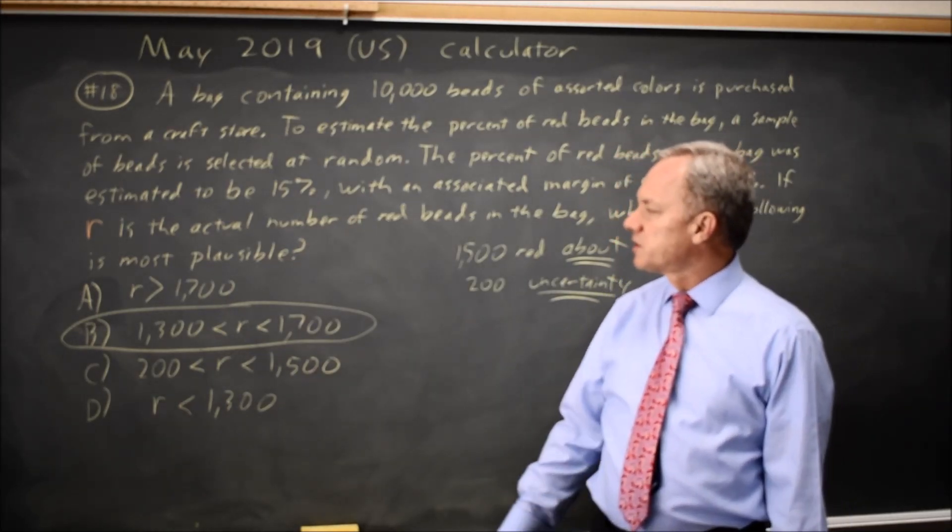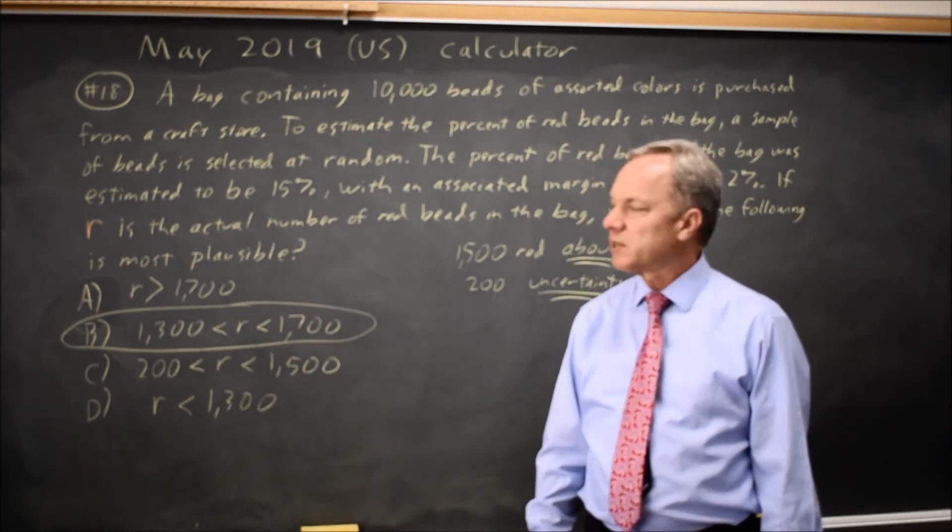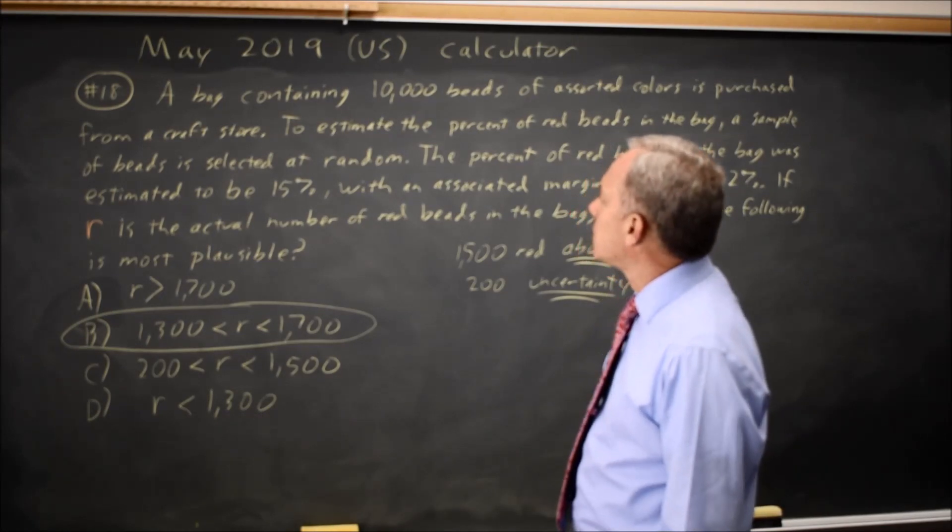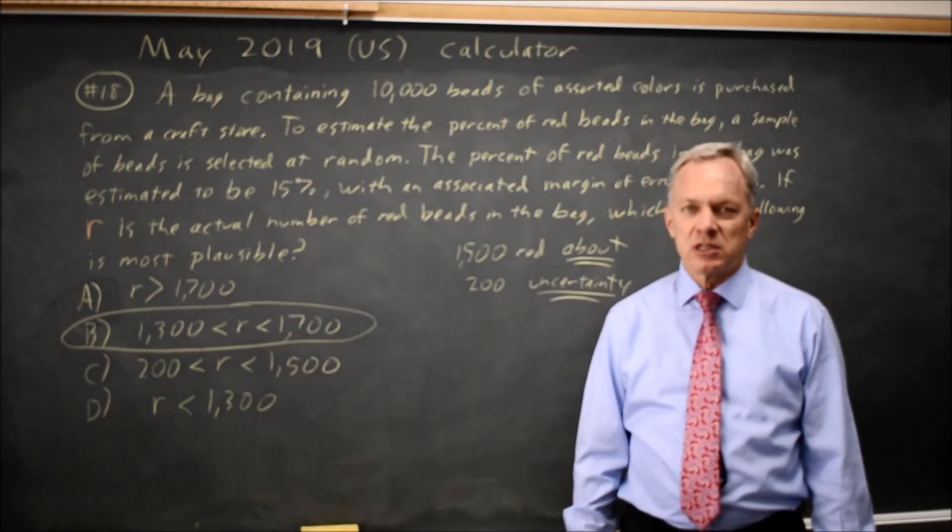So 95% of all samples, the true value R would be between 1,300 and 1,700 is a plausible interpretation, not exactly formally correct, but close for this word problem.